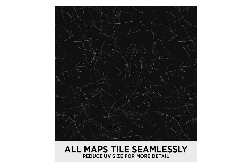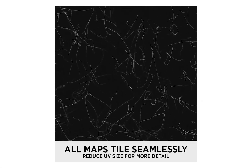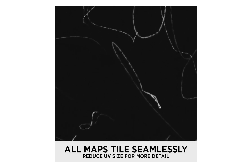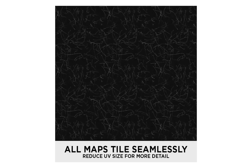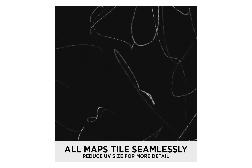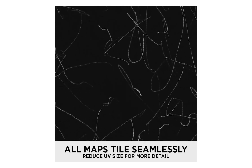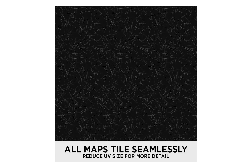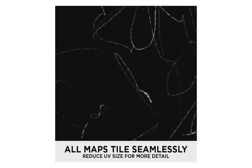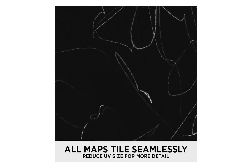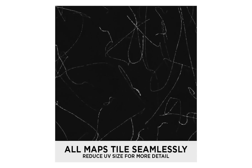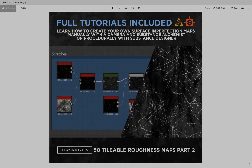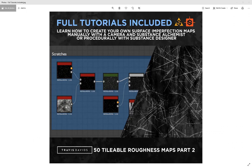Every single map is completely tileable and seamless, created at 4K resolution as 8-bit PNGs. This gives you the freedom to scale up your UV if you want scratches to look big on your 3D model, or reduce the UV scale to get more detail — all without worrying about the map breaking or producing seams.